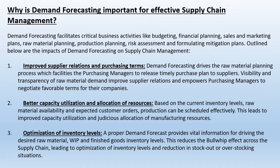Optimization of inventory level. A proper demand forecast provides vital information by driving the desired raw material, work-in-process, and finished goods inventory levels. This reduces the bullwhip effect across the supply chain, leading to optimization of inventory levels and reduction in stockout or overstocking situations.